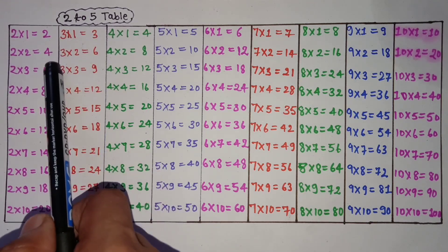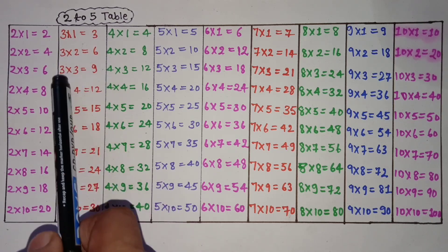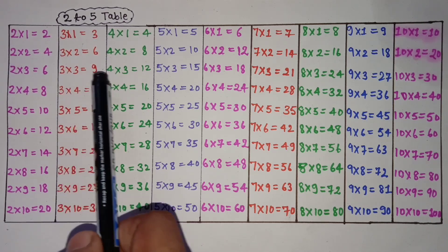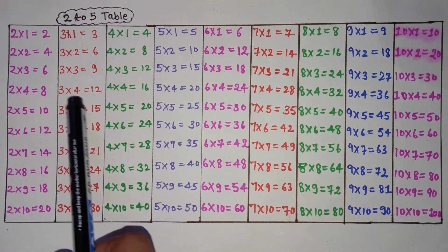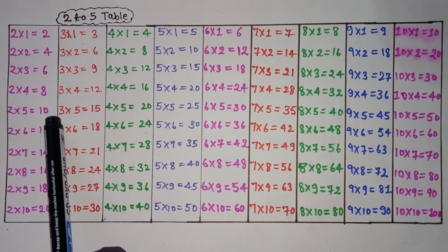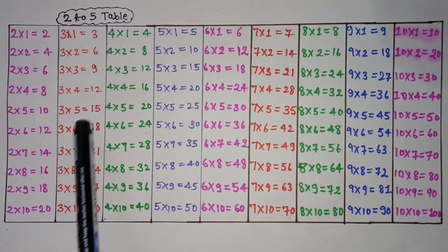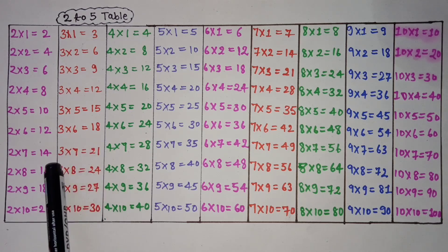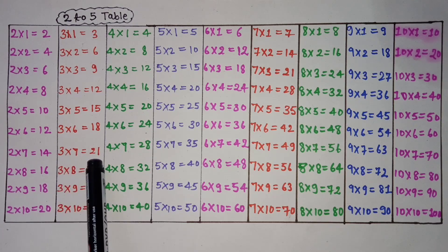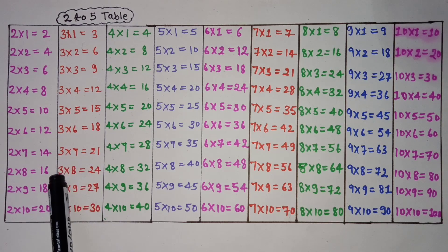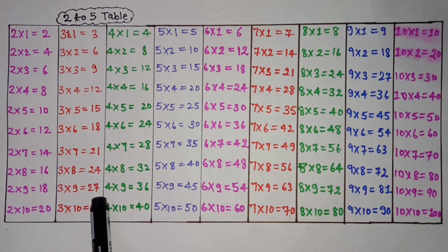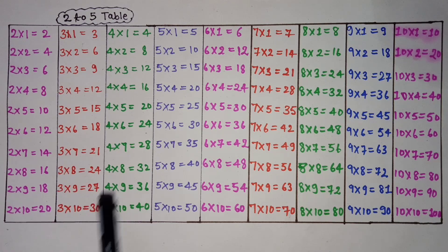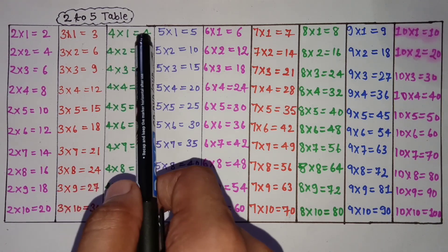3×1 is 3, 3×2 is 6, 3×3 is 9, 3×4 is 12, 3×5 is 15, 3×6 is 18, 3×7 is 21, 3×8 is 24, 3×9 is 27, 3×10 is 30.